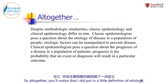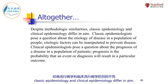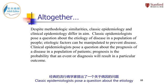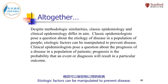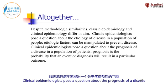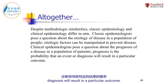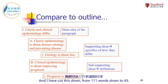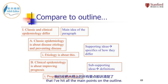Altogether, you'll notice that I did put in a little definition of etiology — I just slipped it in after a semicolon. So we get: despite methodologic similarities, classic epidemiology and clinical epidemiology differ in aim. Classic epidemiologists pose a question about the etiology of disease in a population of people — and here I'm slipping in the definition of etiology: etiologic factors can be manipulated to prevent disease. Clinical epidemiologists pose a question about the prognosis of a disease in a population of patients — and then I slip in the definition of prognosis: prognosis is the probability that an event or diagnosis will result in a particular outcome. I have cut this down from 111 words down to 65. You can check back with the outline and see that I've hit all the main points.